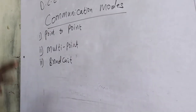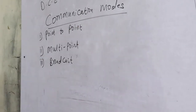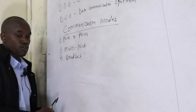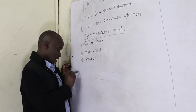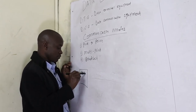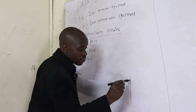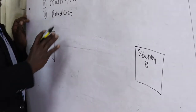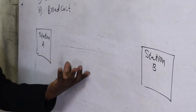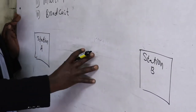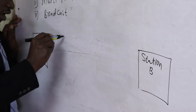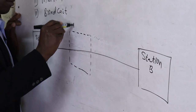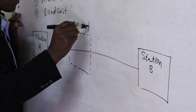In point-to-point communication, we have two devices communicating directly. What can be in between — called intermediate devices — are repeaters or amplifiers. For example, we have Station A and Station B; depending on the distance, we can have one, two, or three repeaters in between. If the distance is short, you don't need a repeater.